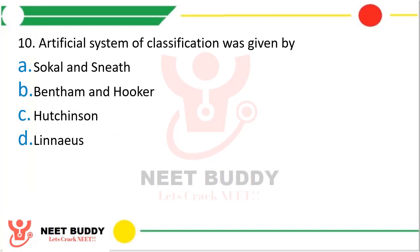Question 20. The artificial system of classification was given by: Option A, Sokol and Sneath; Option B, Bentham and Hooker; Option C, Hutchinson; or Option D, Linnaeus. The correct answer is Option D, Carolus Linnaeus gave the artificial system of classification.